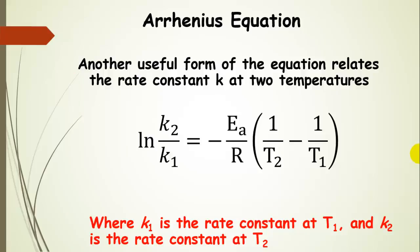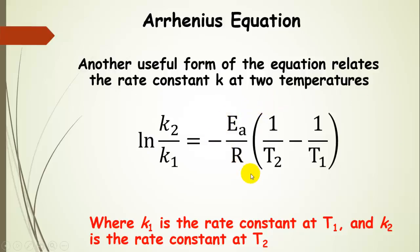Another useful form of the equation relates rate constants at two temperatures: the natural log of K2 divided by K1 equals negative Ea over R, times the quantity 1/T2 minus 1/T1.